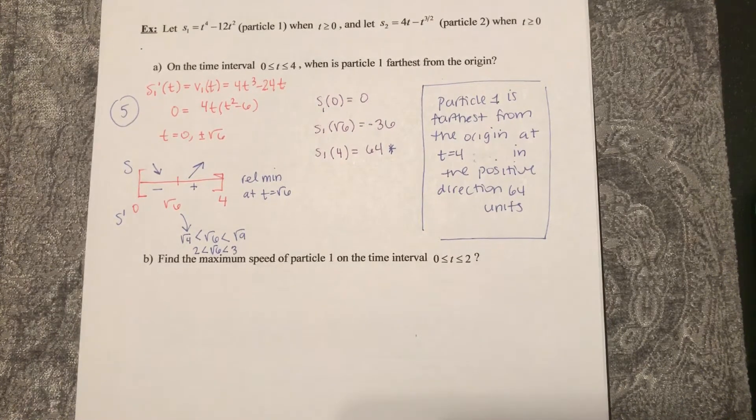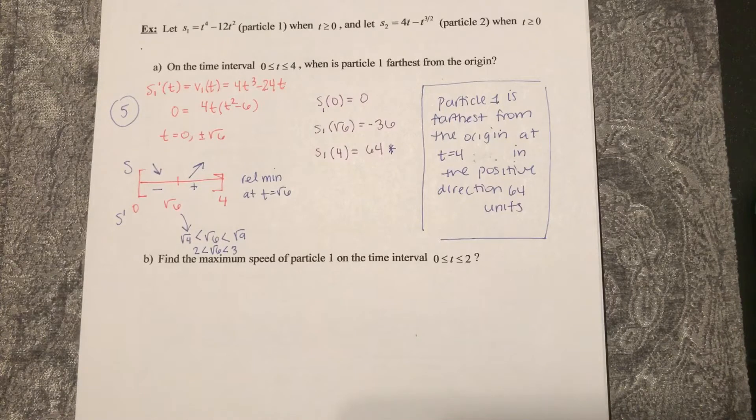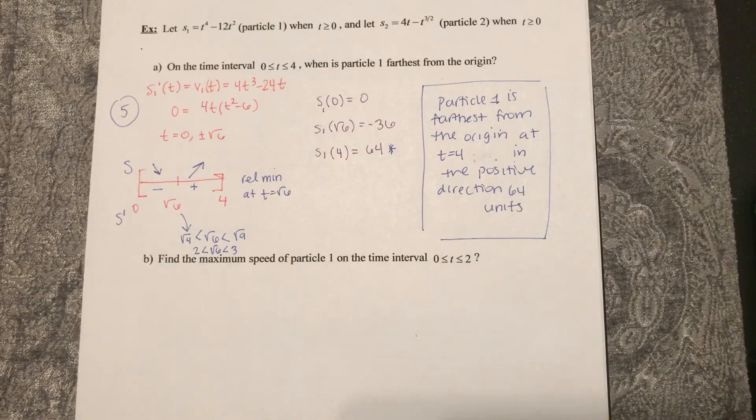Continuing on to part B, we want to find the maximum speed of particle one on the interval from zero to two.